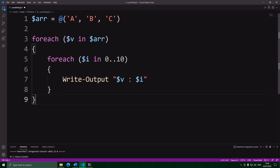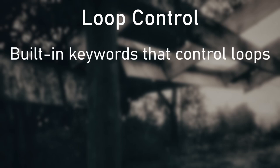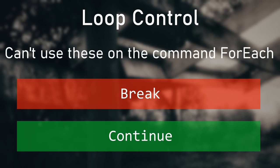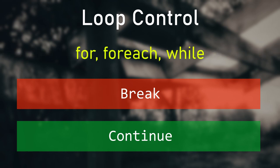There's also another benefit of using the dedicated language structure: you can control the loop from the code inside. In PowerShell, and most programming languages, there are two built-in keywords you can use inside a loop — they're called break and continue. You can use these keywords in any loop: a while loop, a for loop, or a foreach loop. But you can't use them in the command foreach, because it's just a command and not hooked up to work with these.